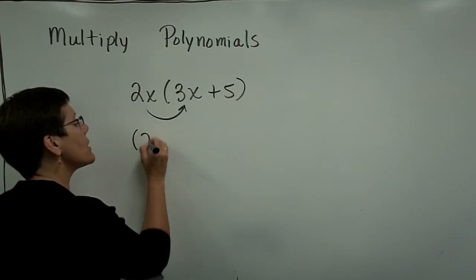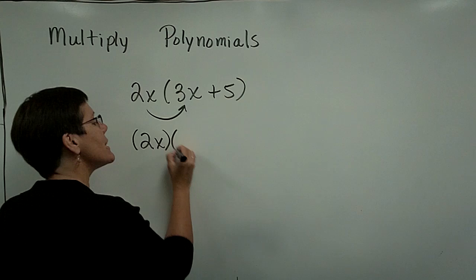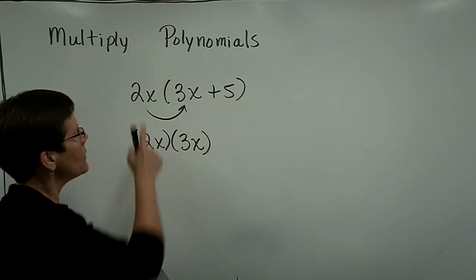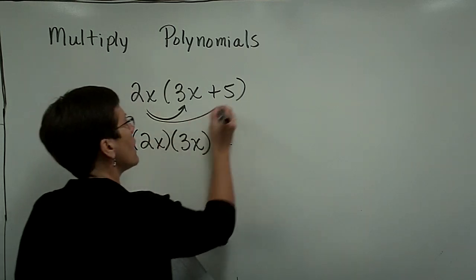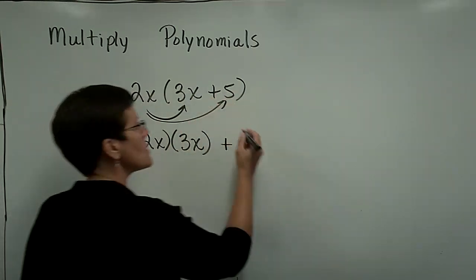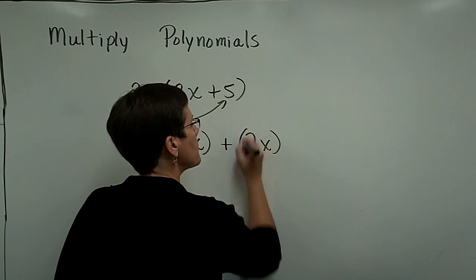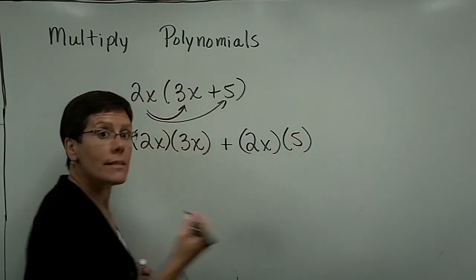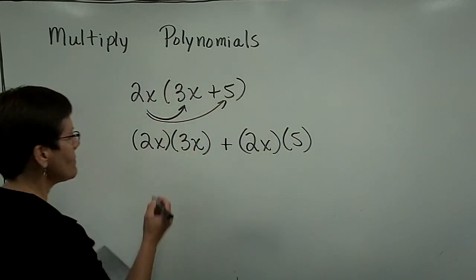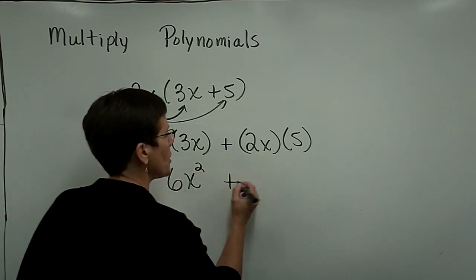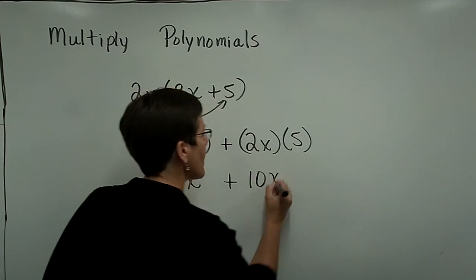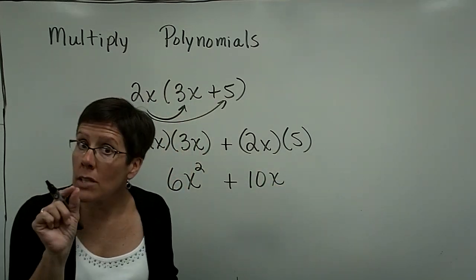I'm going to write down an intermediate step. I personally never take this step. It's too much work for me. 2x times 3x. There's a plus sign here. Then I would take the 2x times the 5, which would give me 10x. So finally, 6x squared would be my first term, and 2x times 5 is a 10x. It would be my second term. And I'm all done.